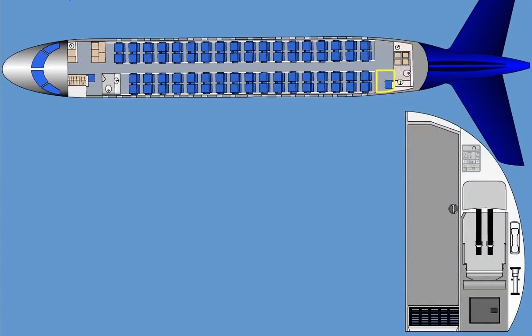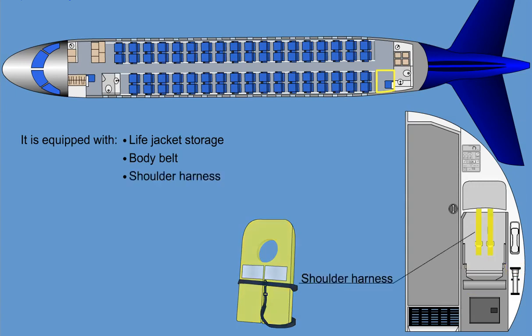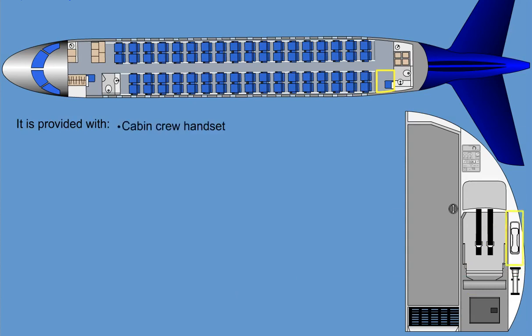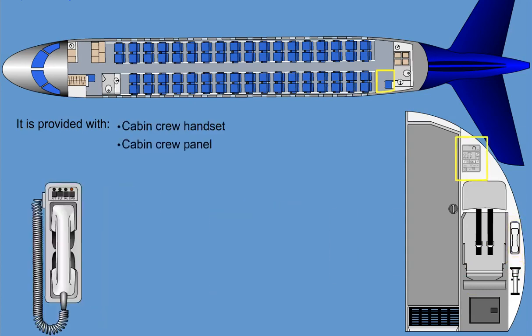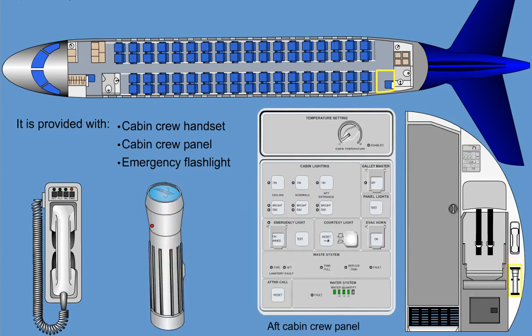The aft cabin crew station is similar to the forward cabin crew station. The jump seat faces forward and is attached to the forward surface of the aft lab, and is also equipped with life jacket stowage underneath, a body belt, and a shoulder harness. The station is also provided with a cabin crew handset, a cabin crew panel, and an emergency flashlight.